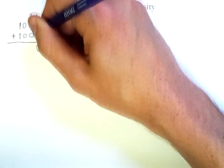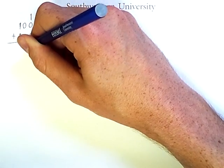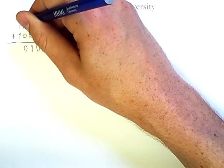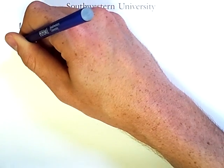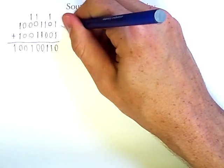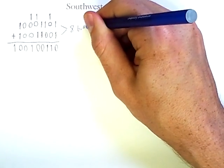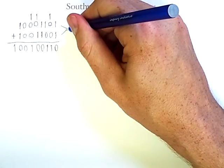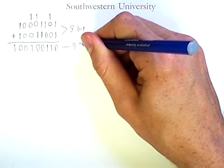One plus zero plus zero is one. Zero plus zero is zero. And one plus one is two, so I put a zero here and a one here. Notice that in adding these two eight-bit numbers, I have produced a result consisting of nine bits.